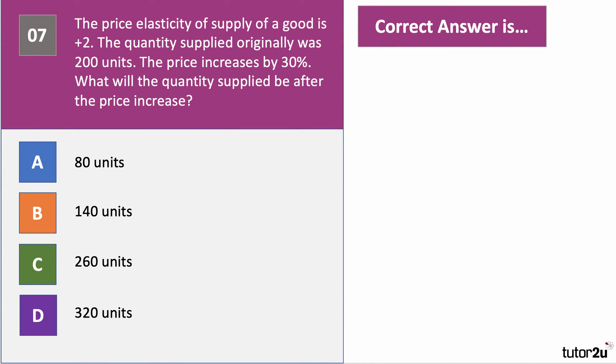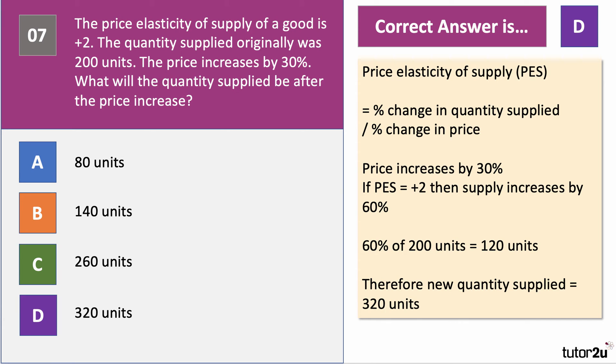Here's question seven about price elasticity of supply. The price elasticity of supply for a good is plus two, and the quantity supplied originally was 200 units. The price increases by 30%. What will the quantity supplied be after the price increase? The correct answer is D. Price elasticity of supply equals percentage change in quantity supplied divided by percentage change in price. With a 30% price increase and elasticity of two, supply must have increased by 60%. 60% of 200 units is 120, so the new quantity supplied is 320 units.